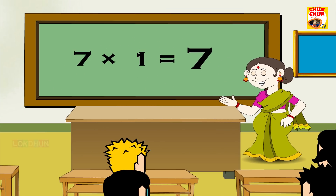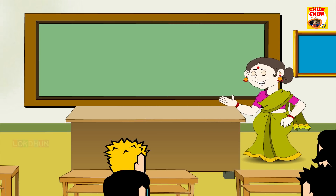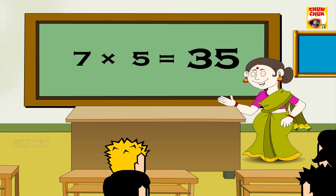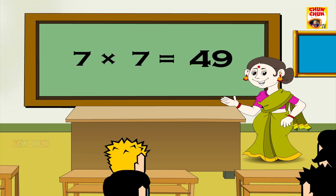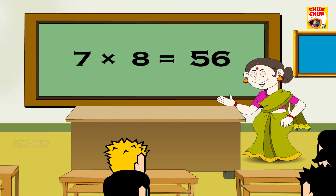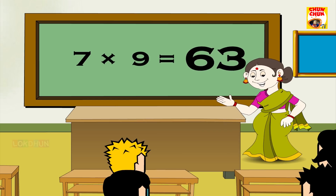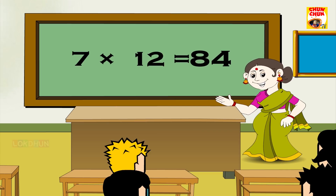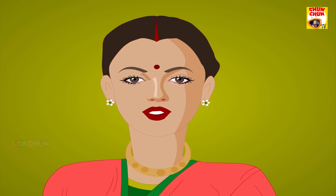7 1s are 7, 7 2s are 14, 7 3s are 21, 7 4s are 28, 7 5s are 35, 7 6s are 42, 7 7s are 49, 7 8s are 56, 7 9s are 63, 7 10s are 70, 7 11s are 77 and 7 12s are 84. Turn children.